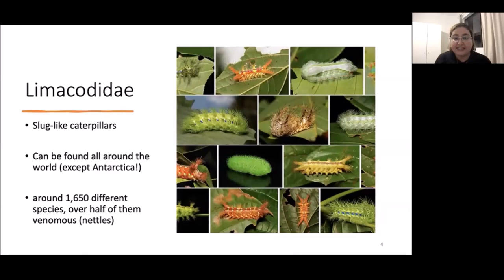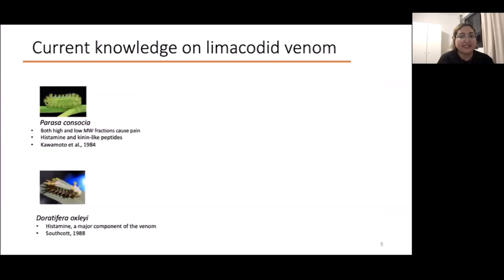We haven't really studied nettle caterpillars. The first study was back in the 80s, which divided the venom of an Asian caterpillar, Parasa consortia, into low molecular weight fraction and higher molecular weight fraction. They injected that into human volunteers and realized that both fractions can cause pain.